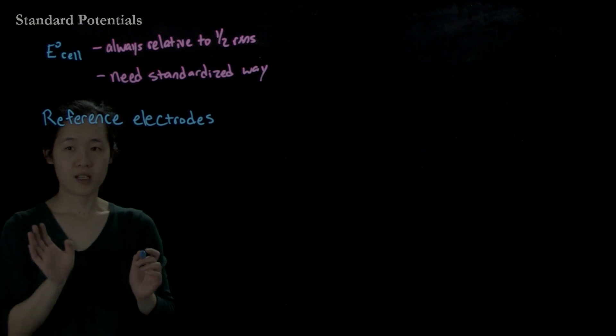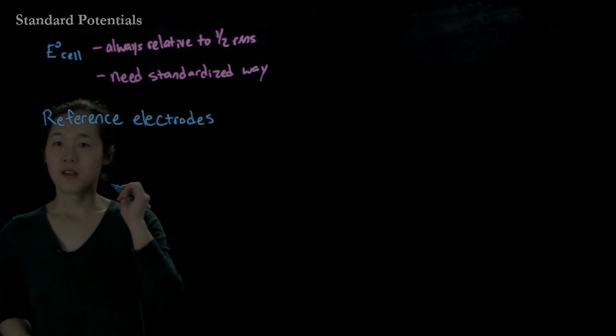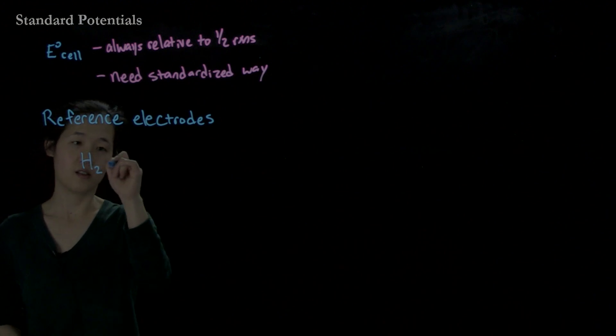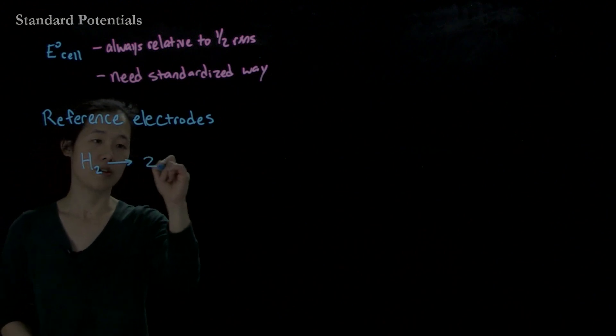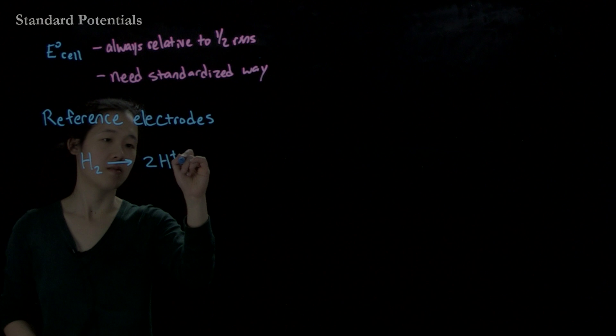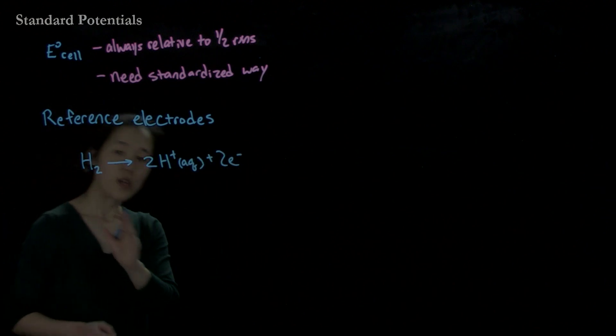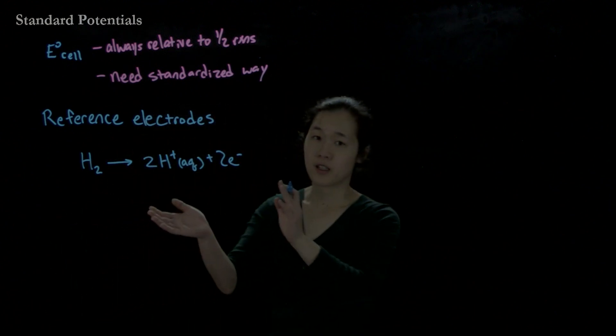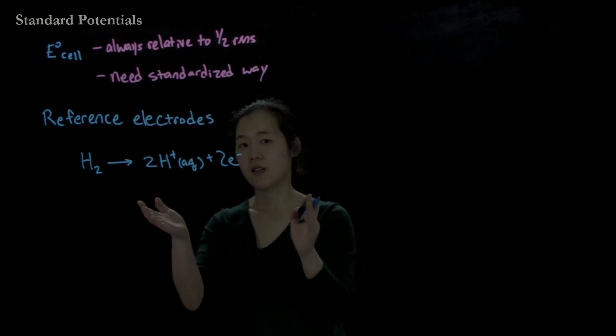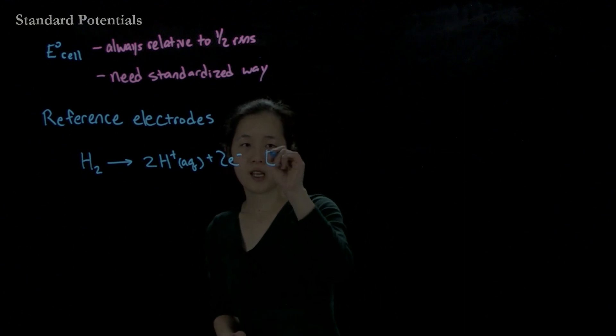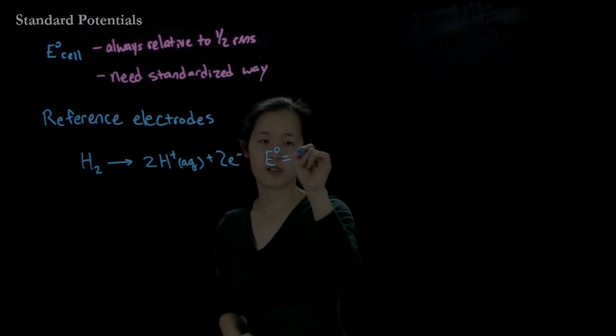So what I mean is, for example, if we think about the oxidation of hydrogen gas going to two protons aqueous and two electrons, we will set this arbitrarily to zero. This is all relative. It could be any number, but we'll set this to zero. So we'll say this E naught equals zero.